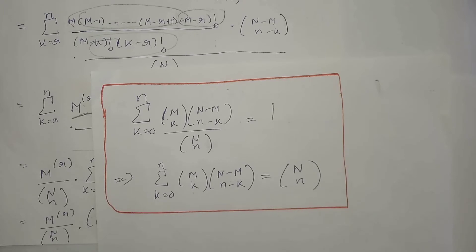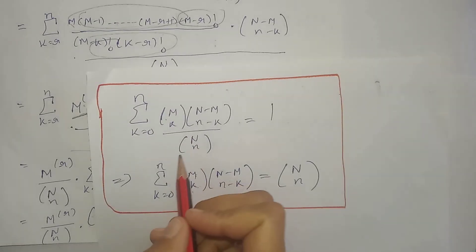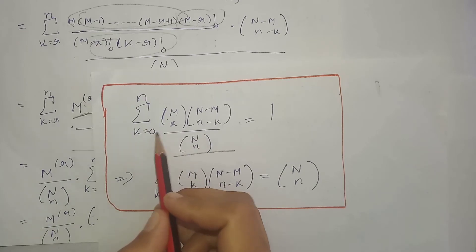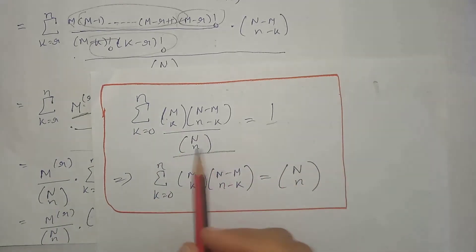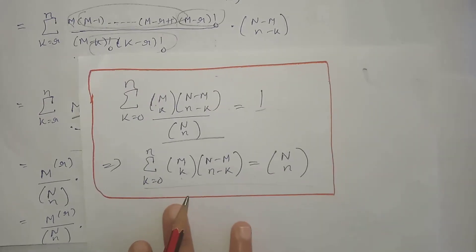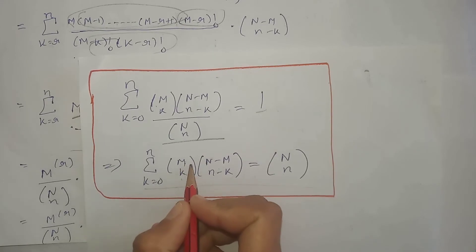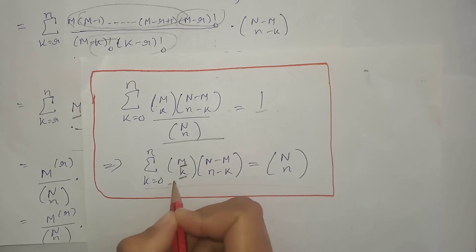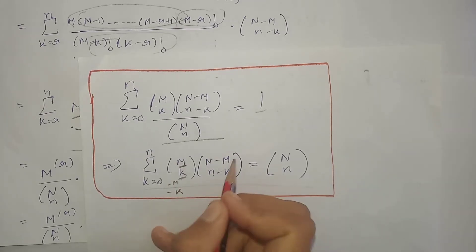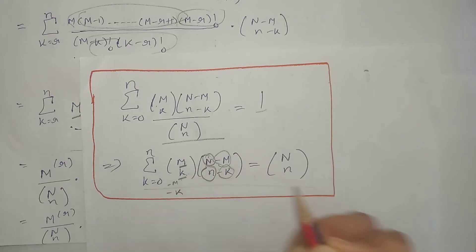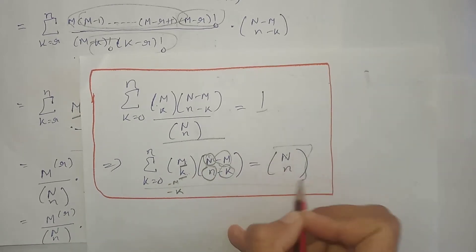Now in these two terms there is no k at all, that's why we can take these outside the summation. Now we know that if we sum over all values of k for the hypergeometric PMF, our answer equals one. That is, if we take this term to the other side, we get this relation.